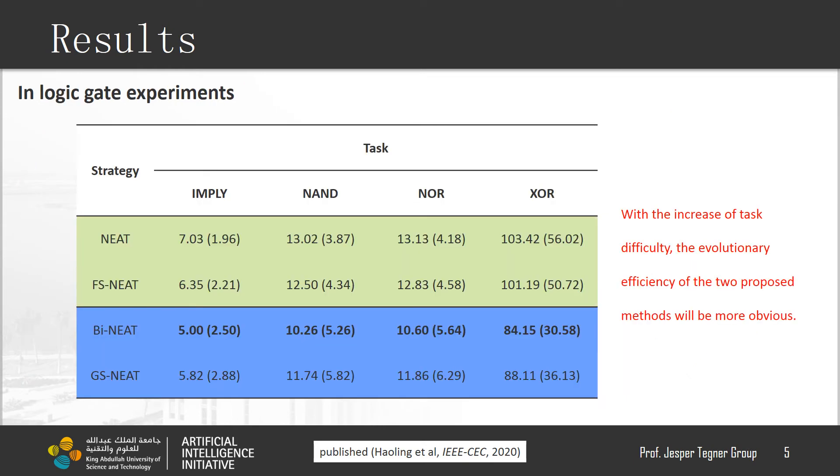For the neural evolution, we discuss baseline NEAT and FS-NEAT with reverse encoding tree. We call Bi-NEAT and GS-NEAT are NEAT with binary search and golden section search, respectively.